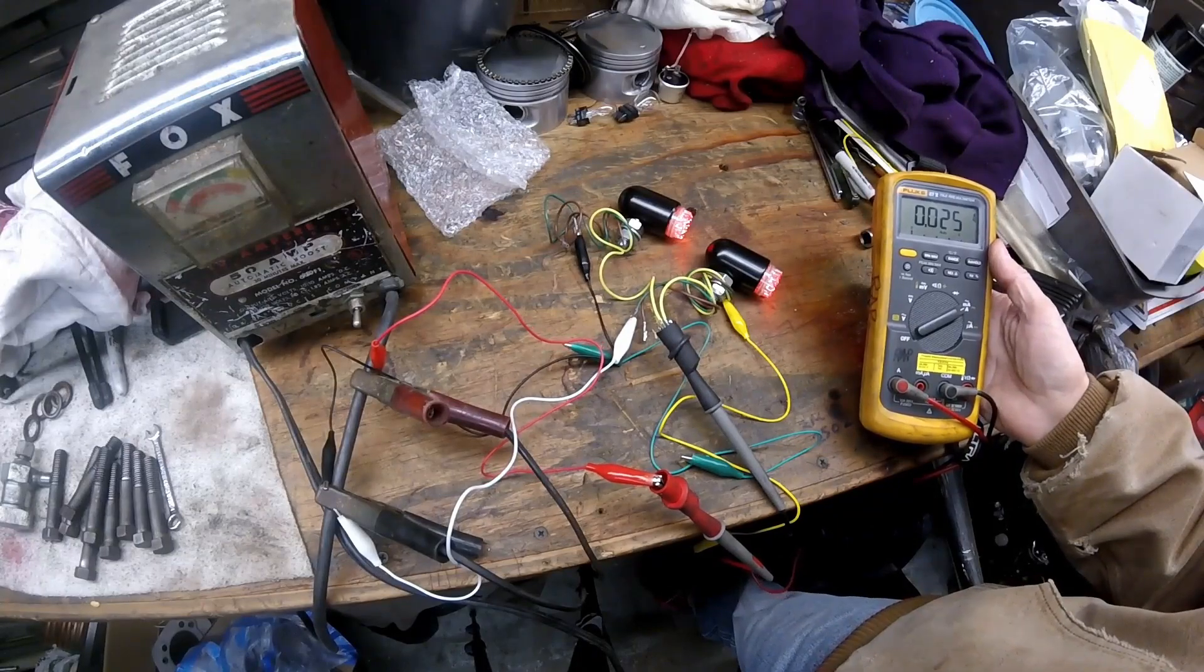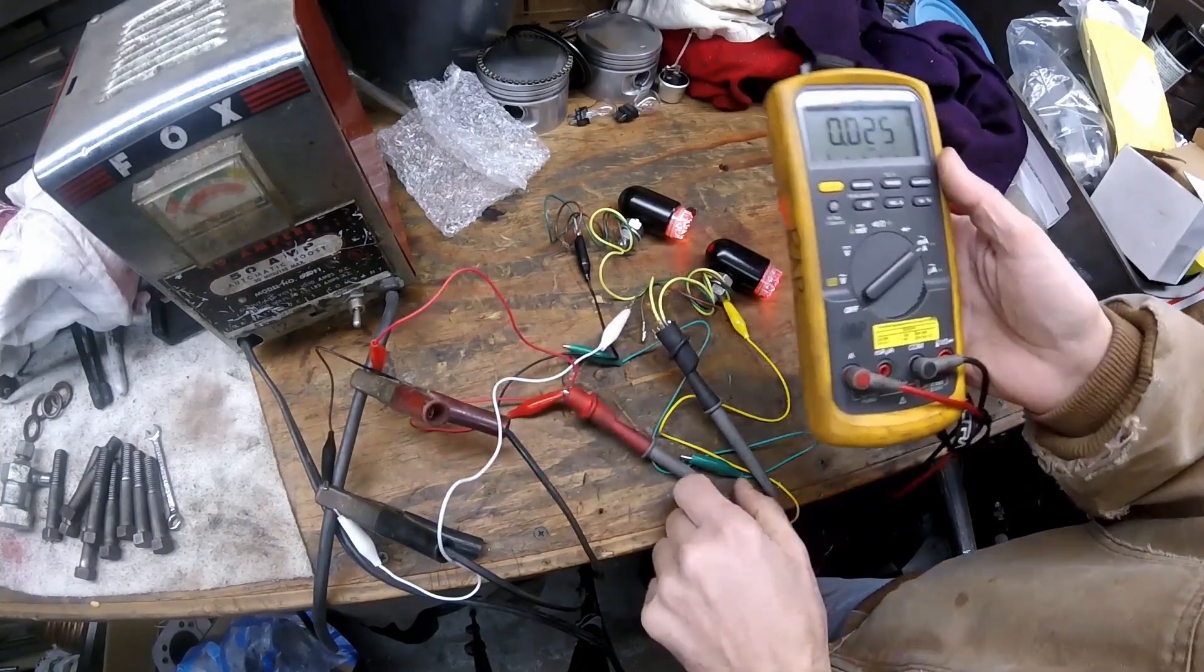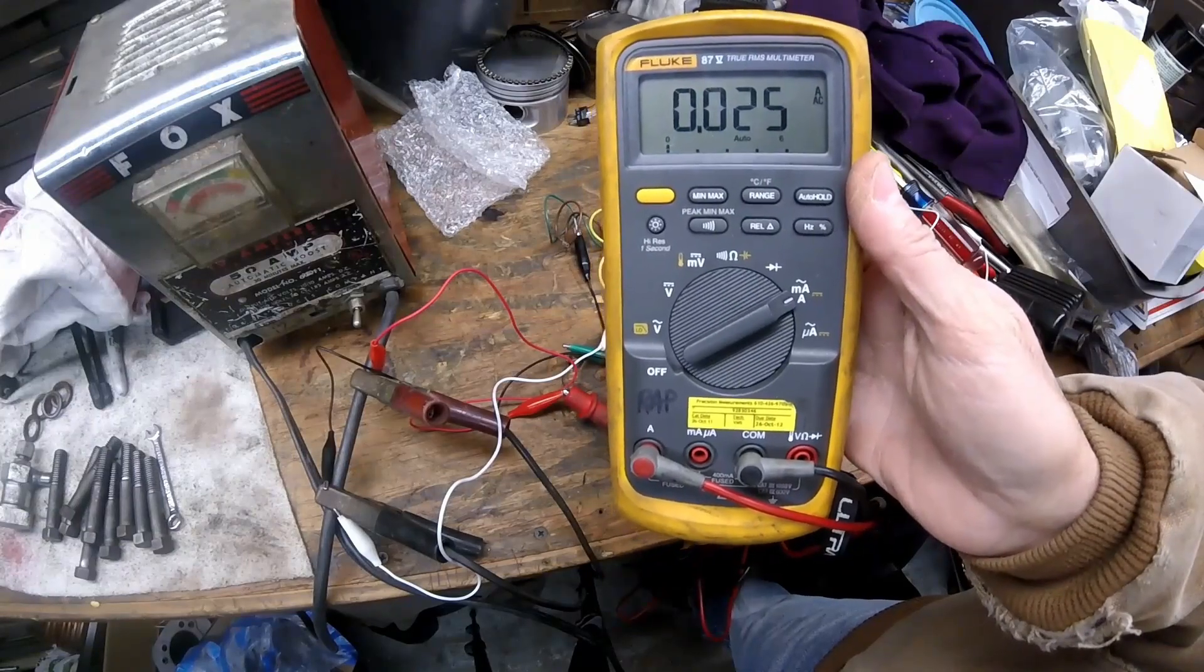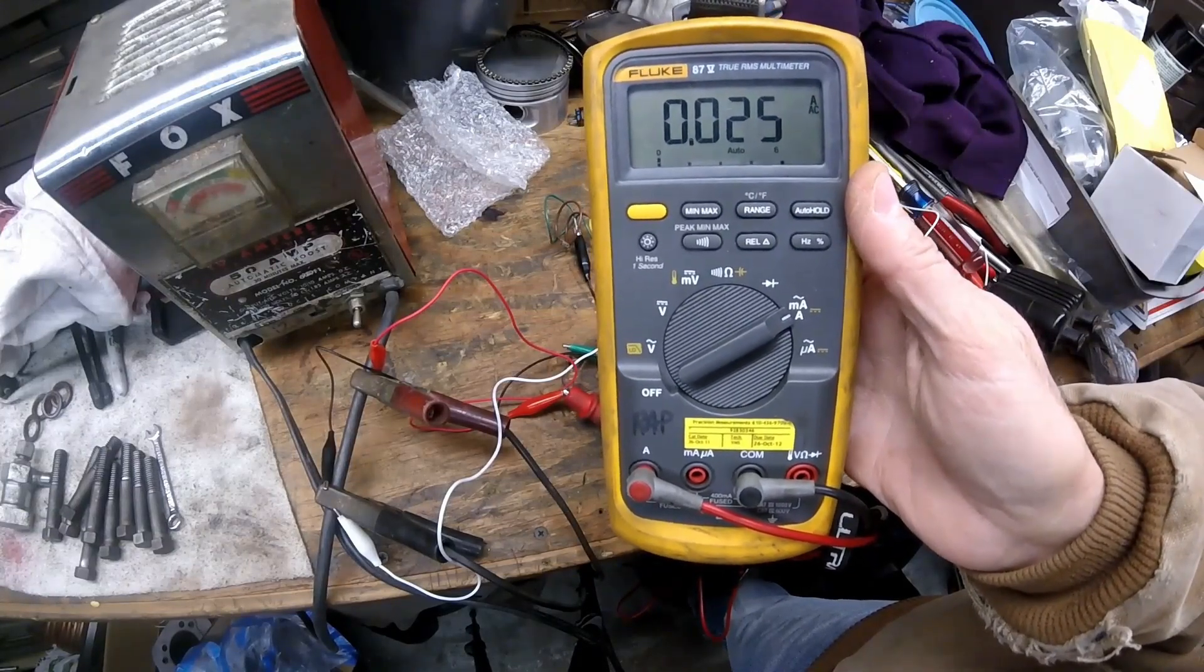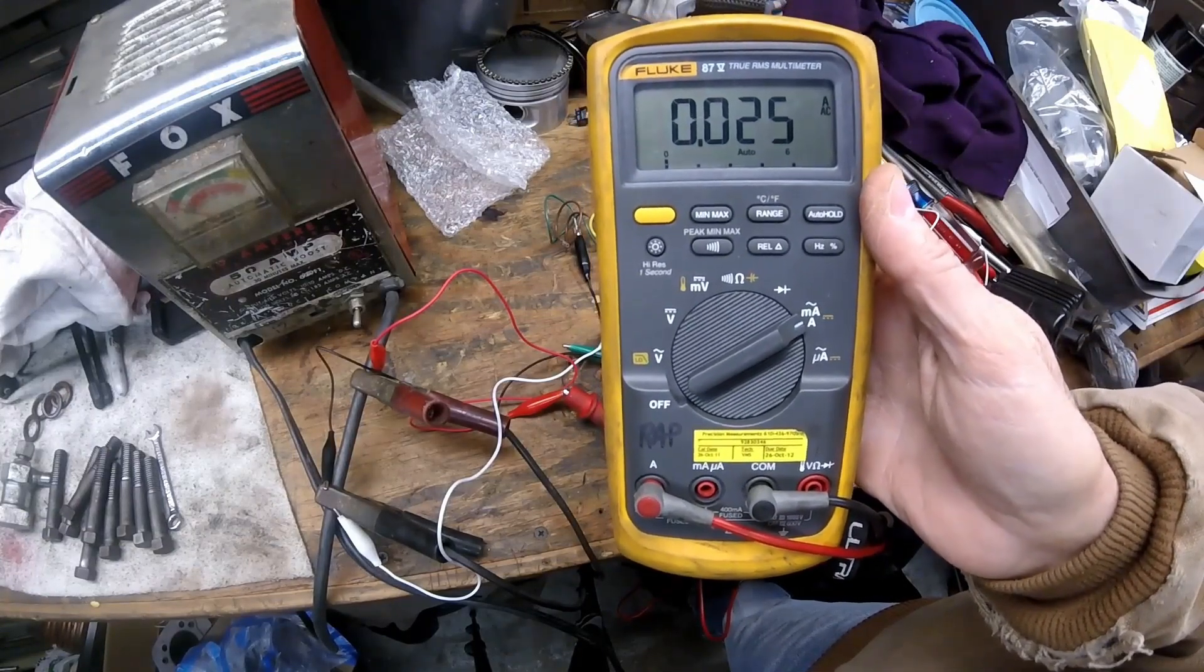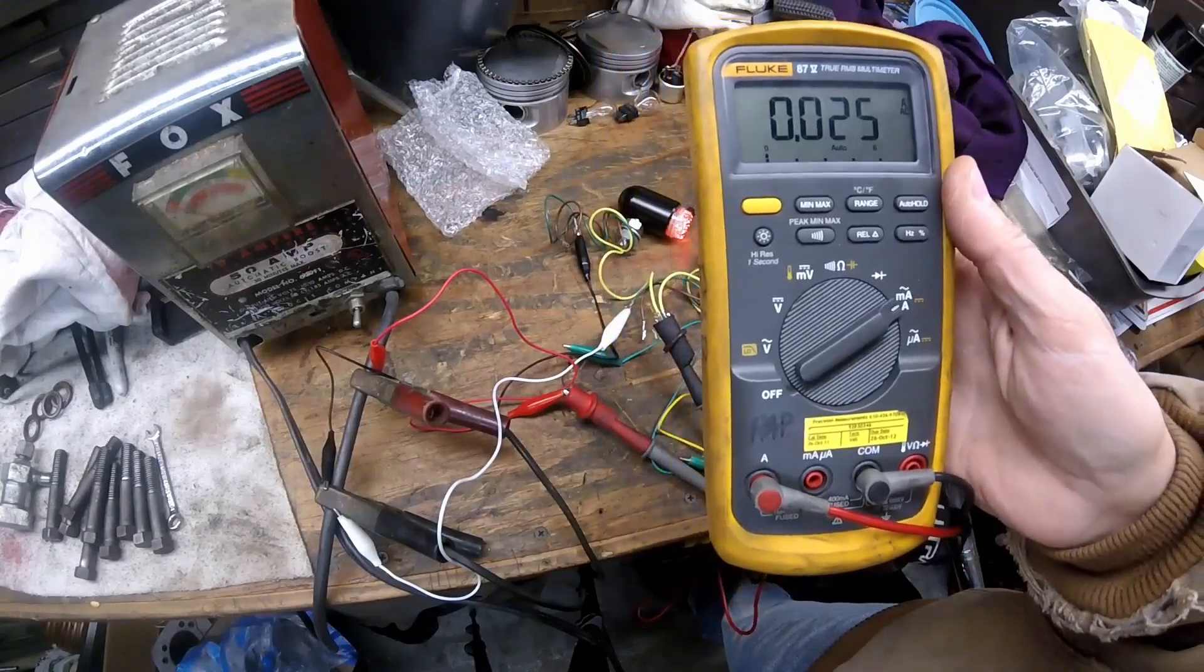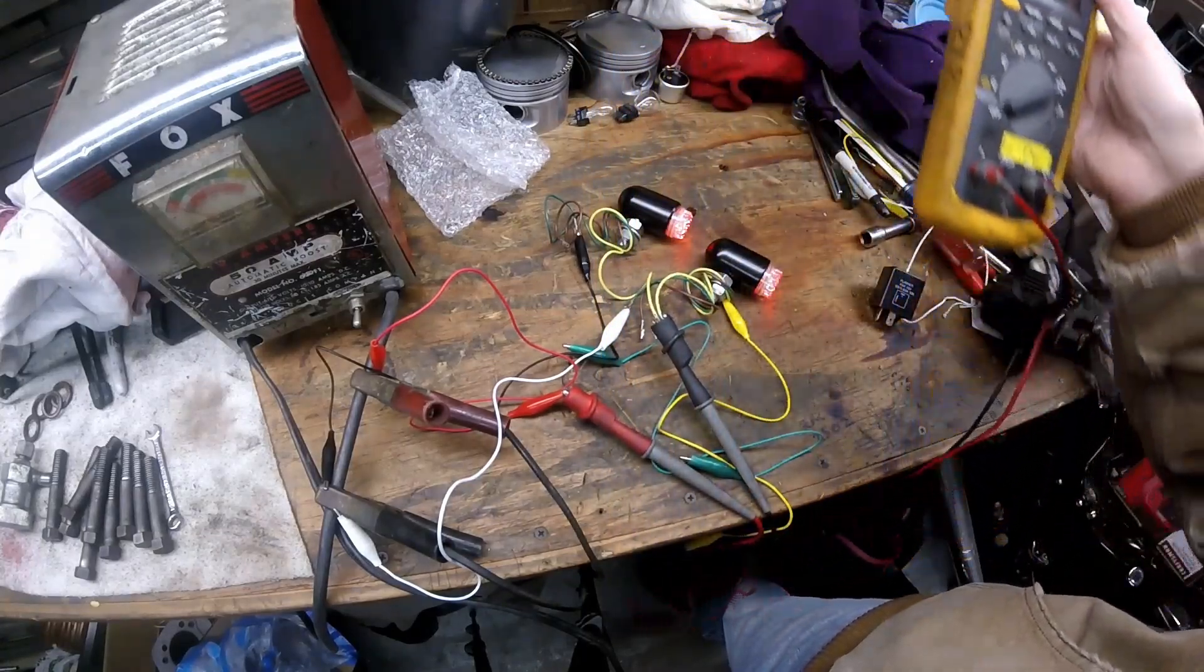So now I have the LEDs wired in. And as you can see by my amp meter, these are drawing 0.025 amps, or 250 milliamps, which is about 5% of what the incandescent bulbs draw.